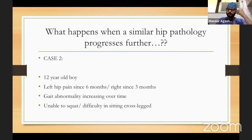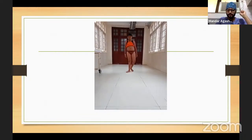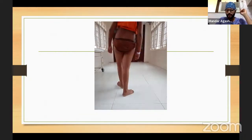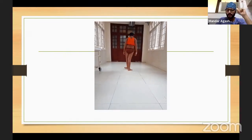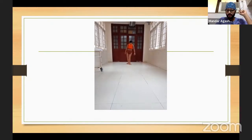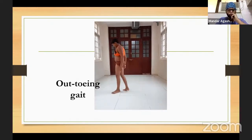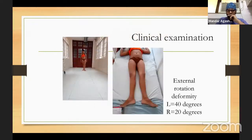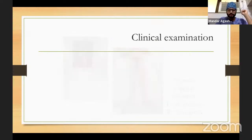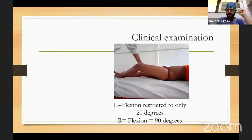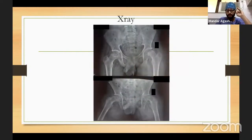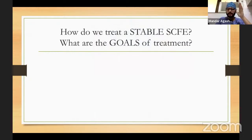Case 2: a 12-year-old boy with a prolonged history of bilateral hip pain — more on the left side — with progressive gait abnormality, currently unable to squat or sit cross-legged. He walks with severe external rotation gait, abductor lurch, and barely flexes the hip. On examination, external rotation deformity on both sides and flexion restricted to only about 20 degrees. X-ray shows very severe slip on the left side and moderate slip on the right — requiring different treatment. Before treating, we should know our goals: prevent slip progression, prevent FAI, restore proximal femoral anatomy, and prevent iatrogenic AVN.